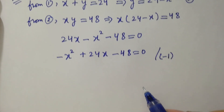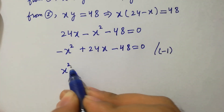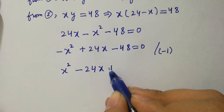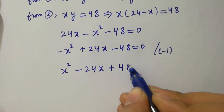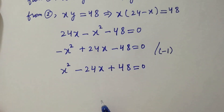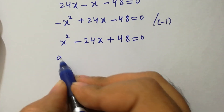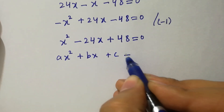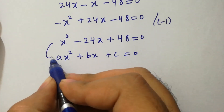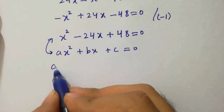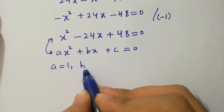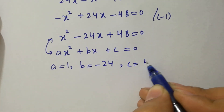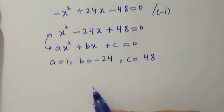Dividing both sides by minus 1, we get x squared minus 24x plus 48 equal to 0. This is a quadratic equation of the form ax squared plus bx plus c equal to 0. By comparing, a equal to 1, b equal to minus 24, and c equal to 48. Now apply the quadratic formula.